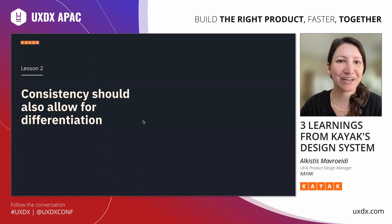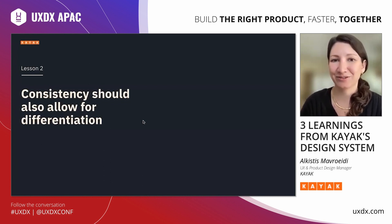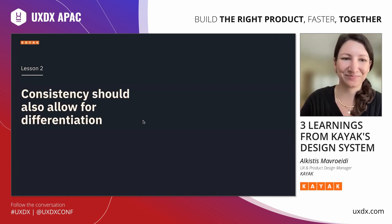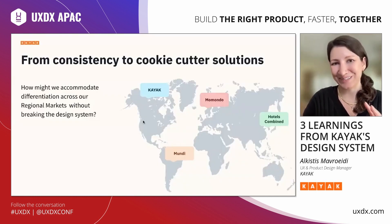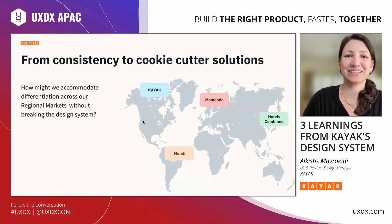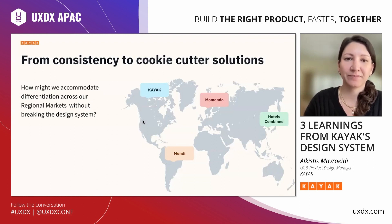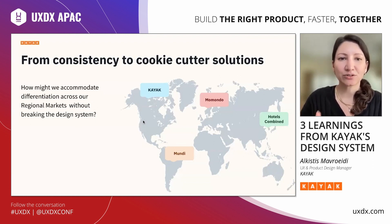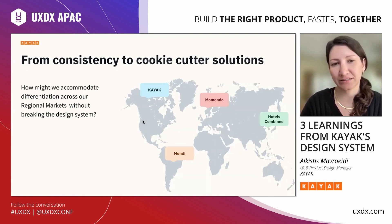So now we're moving to learning number two: consistency should also allow for differentiation. The first challenge of the design system, as mentioned, was to create a consistent experience across our product, which also ensures quality. However, we realized that a cookie-cutter system that's inflexible doesn't allow for differentiation and was not going to work for a regionalized market.